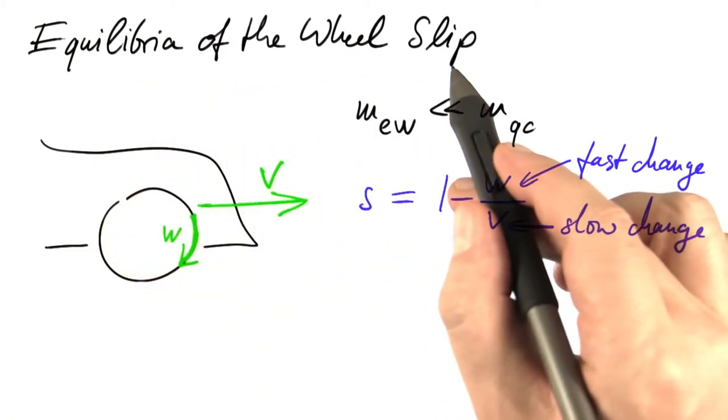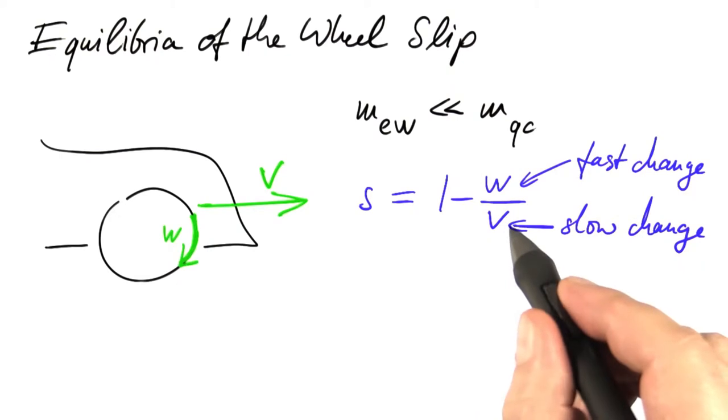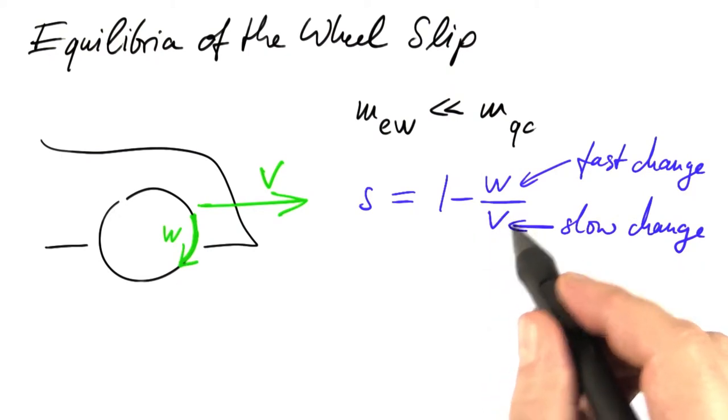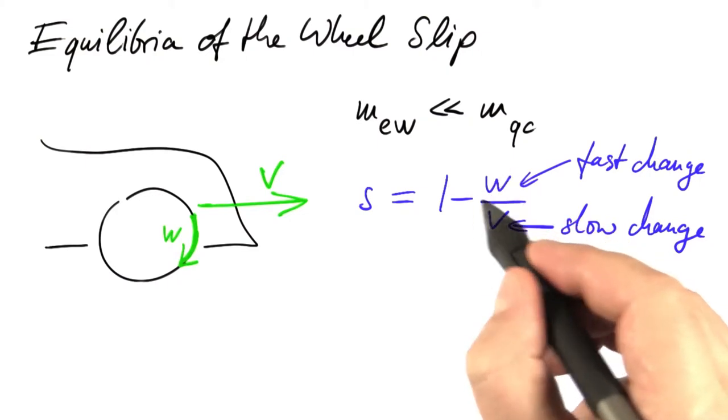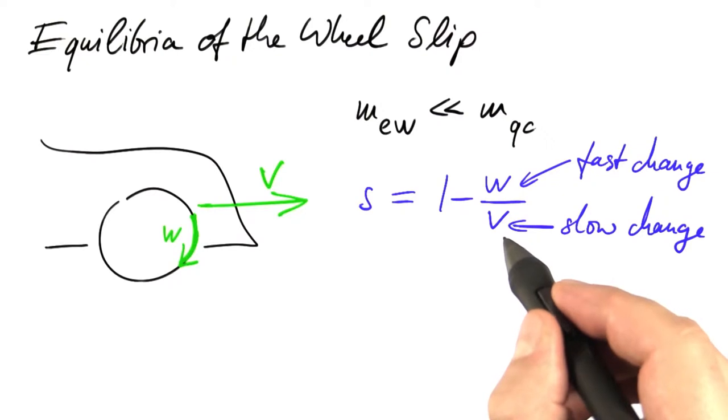So when we want to study equilibria of the wheel slip, that is values which it stays constant, we can start by thinking about the velocity of the car as a slow variable and the velocity of the rim of the wheel as a fast variable. We'll cheat a little and say, let's assume that the velocity of the car is almost constant.